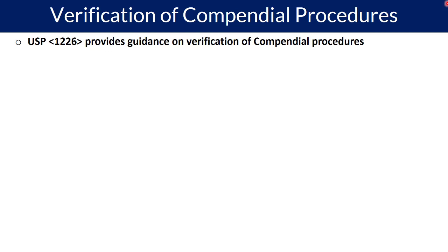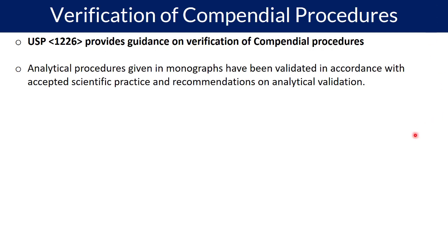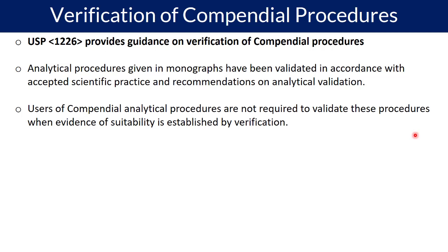USP General Chapter 1226 provides guidance on verification of compendial procedures. Whenever a test procedure is mentioned in a monograph, it has already been properly validated before being published. That means the procedures given in a monograph have been validated with sound scientific practice. So if you want to use that same test procedure without any changes, you do not need to validate it again.